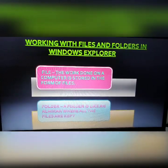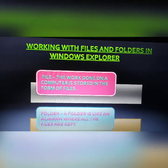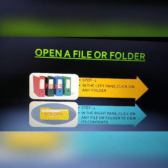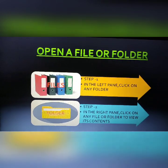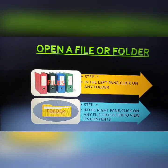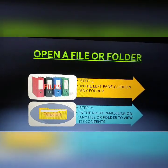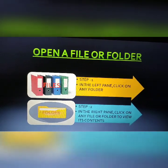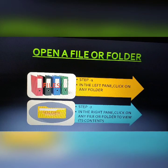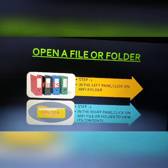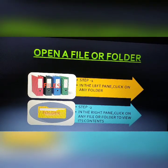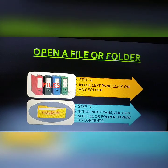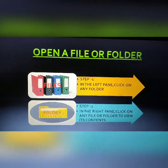Our next topic is opening a file or folder. There are two steps: Step 1 — in the left pane, click on any folder. Step 2 — in the right pane, click on any folder or file to view its content. After clicking, we can view the contents of that file or folder. These are the two basic steps to open a file or folder.